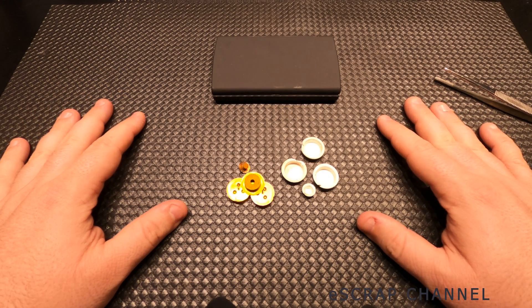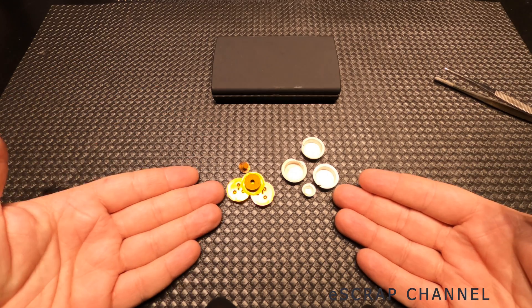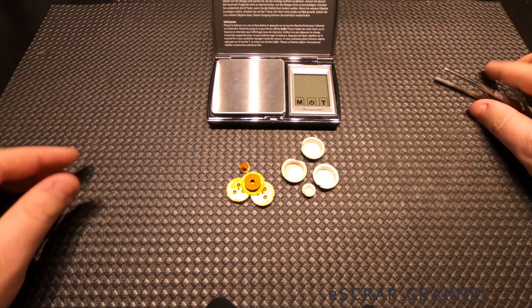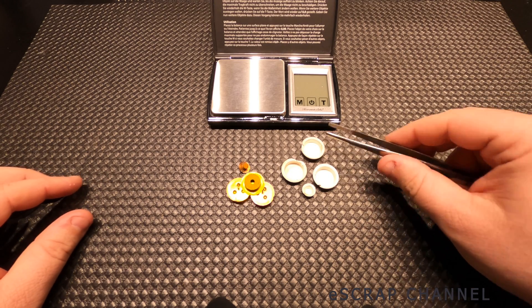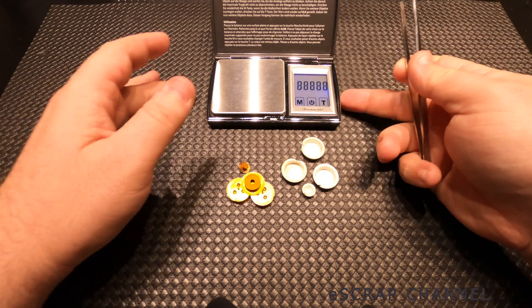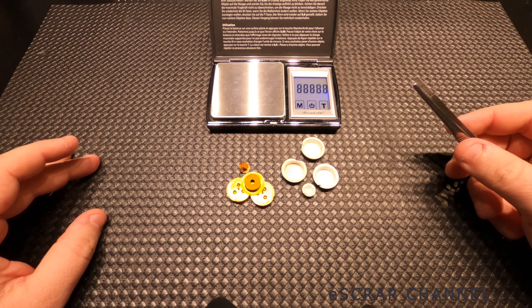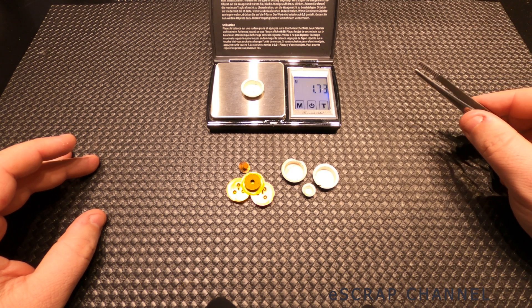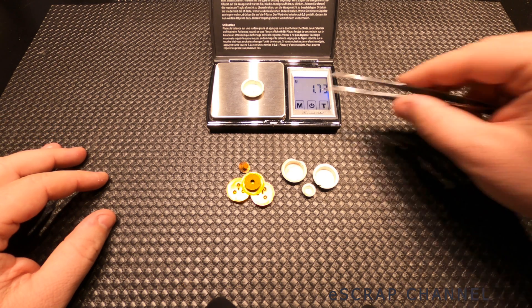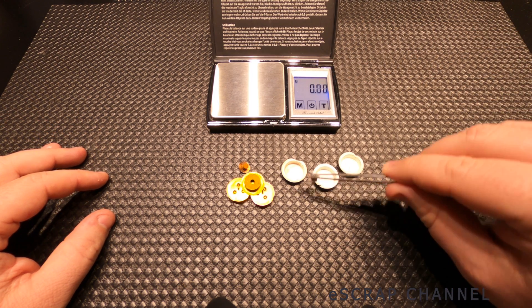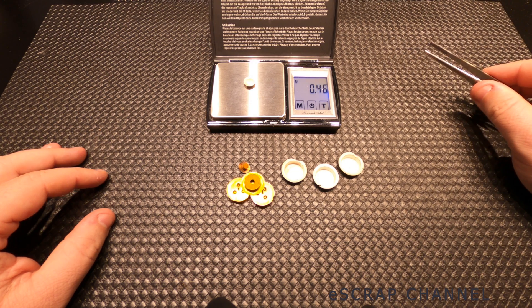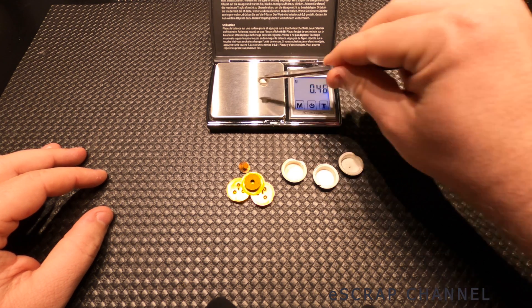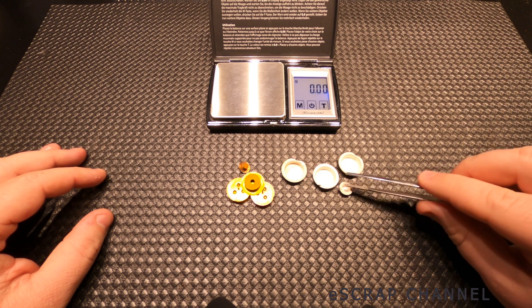So this is the final result. We have silver and we have tantalum. Let's quickly check what is the weight of these silver cups. I can start scale. And let's have a look together. So the big ones are 1.7 grams. And the small ones are 0.46. So big difference between the big ones and the small capacitors.